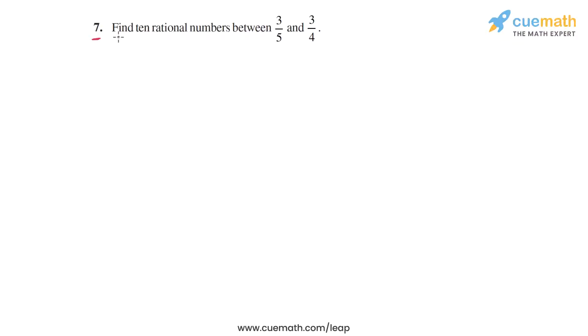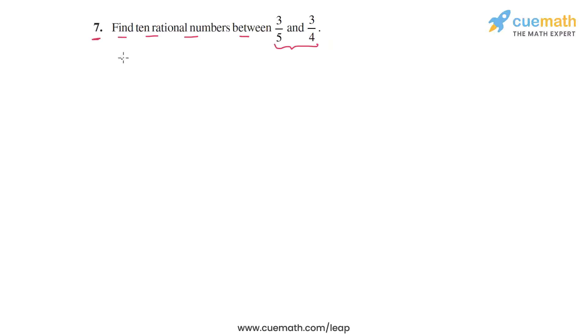In question 7, we have to find 10 rational numbers between the two numbers 3/5 and 3/4. Any 10 rational numbers between these two numbers will work as an answer.